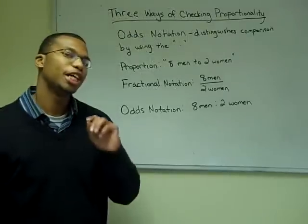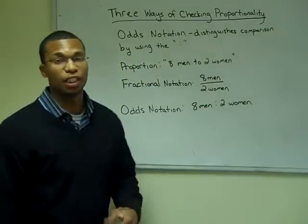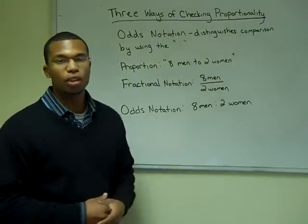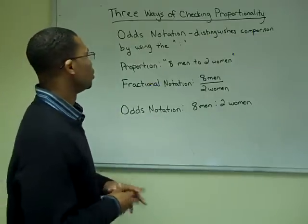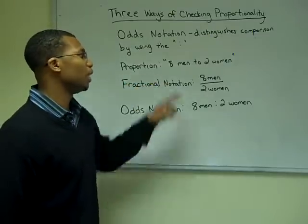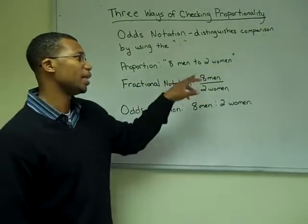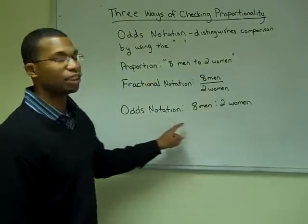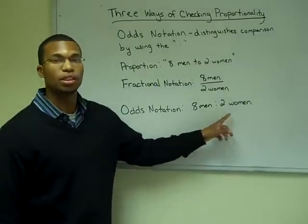The last way of checking proportionality is by using the odds notation. The odds notation uses a colon to represent the comparison of the two. In the proportion example, we had eight men to two women. In the fractional notation example, we had eight men over two women. And in the odds notation example, we're going to say eight men colon two women.